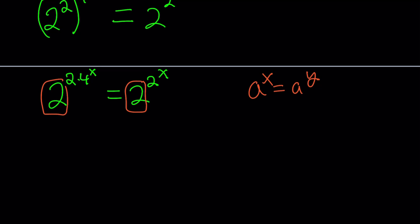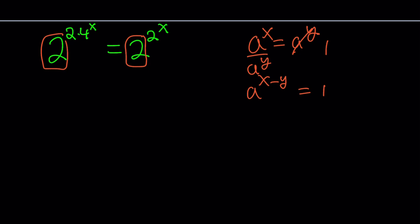But a safer method would be to divide both sides by a to the y, set it equal to 1, and then subtract the exponents and then look at different cases, how you can get 1. So we can do that, obviously. If you divide both sides by 2 to the 2 to the x, you get 2 to the power 2 times 4 to the x minus 2 to the x, and that equals 1.